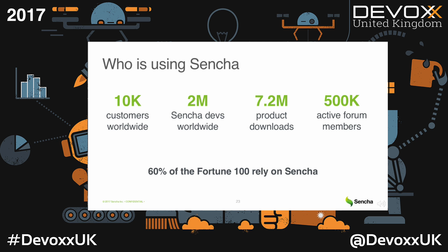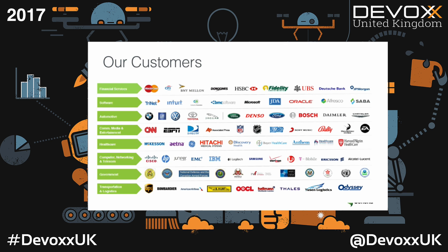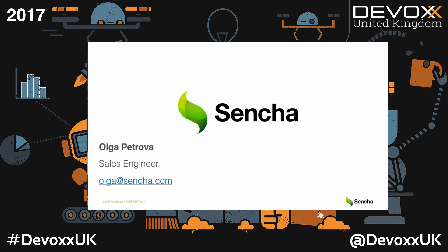In summary, who is using Sencha? We have about 10,000 customers, 2 million developers, more than 7 million product downloads, and half a million active forum members. And here are some examples of the types of companies using Ext.js.